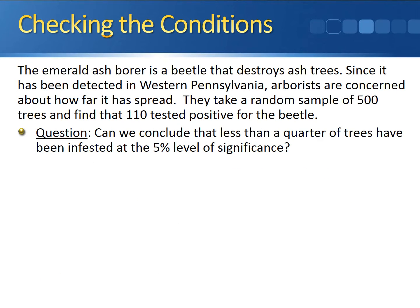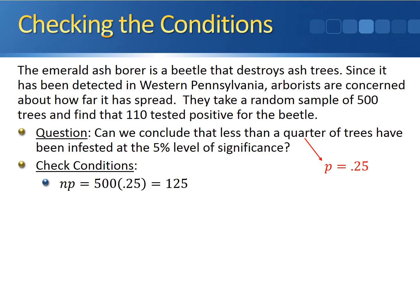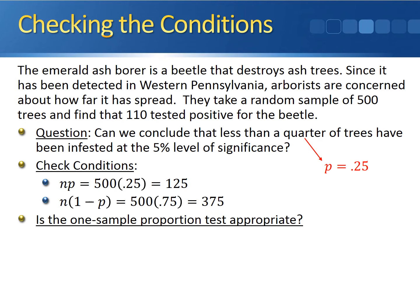Before we begin the hypothesis test, we first have to check the conditions. The conditions require that both n times P and n times 1 minus P are at least 5. We don't have an explicit value for P, but since we're asking if less than a quarter of trees have been infested, the hypothesized proportion is 0.25. Now we can check: n times P is 500 times 0.25, which gives us 125. And n times 1 minus P is 500 times 0.75, which gives us 375. So the one-sample proportion test is appropriate — both conditions are satisfied.